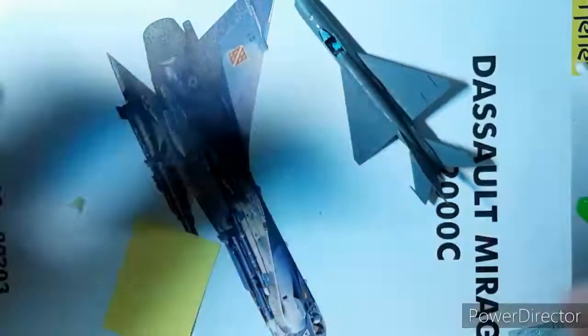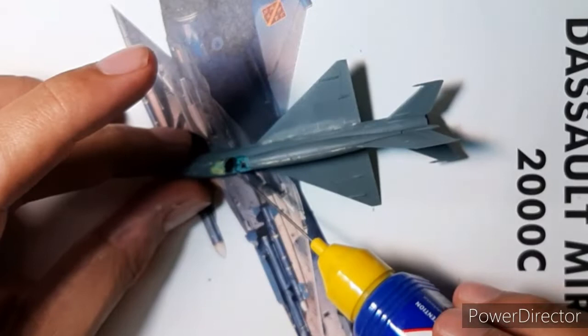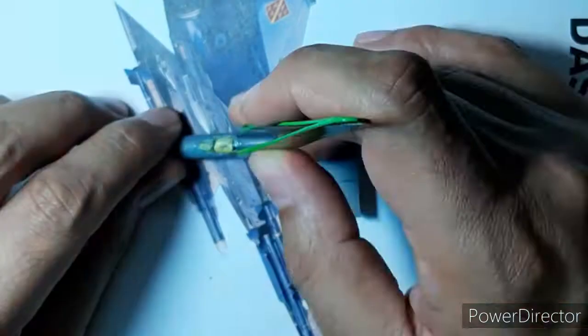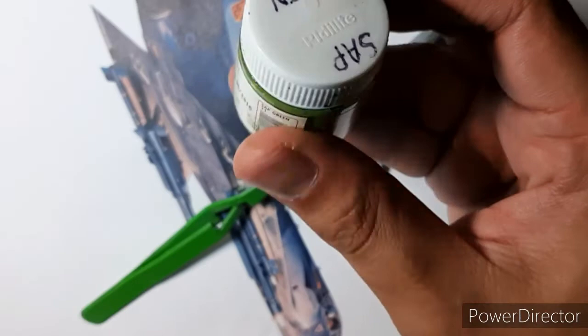The canopy and other stuff that you will see as we progress in the video. This was a much-needed thing that was very thoughtfully included by Eduard in this kit. So I began painting the dielectrics with Fevicryl sap green.